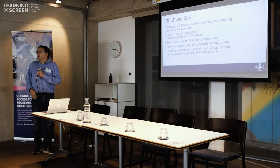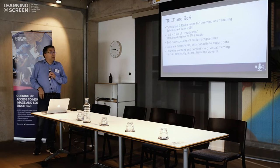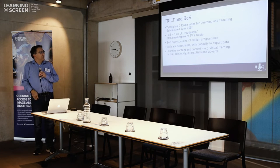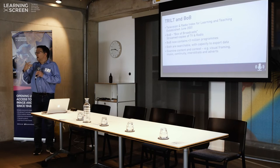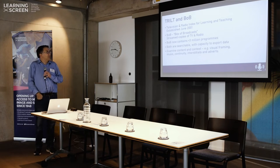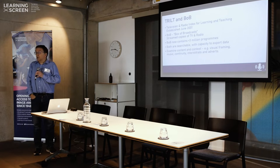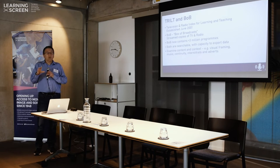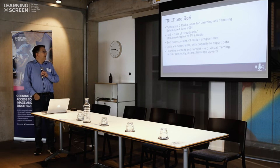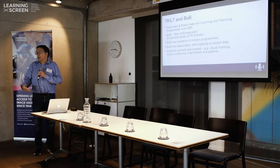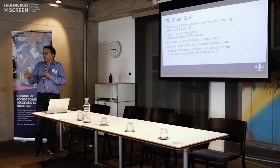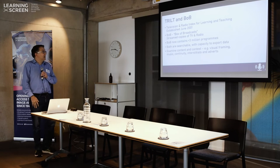Bart's already introduced TRILT and BoB and I'm sure the audience today are very familiar with these anyway. TRILT is the Television and Radio Index for Learning and Teaching, and Bart gave an eloquent explanation of what it is and how much is there - it's been in existence since June 2001. BoB, sometimes called Box of Broadcast though that's not an official name, is where we can stream TV and radio programmes for education, but as we're suggesting, for research as well.